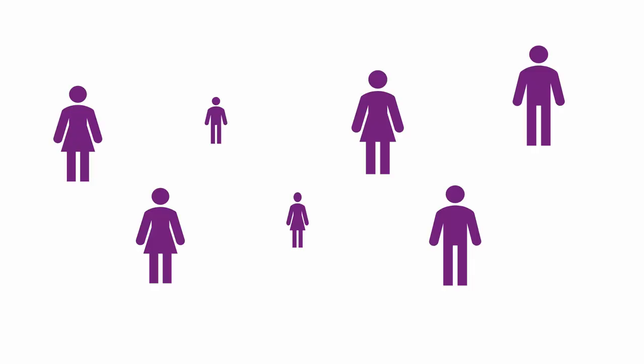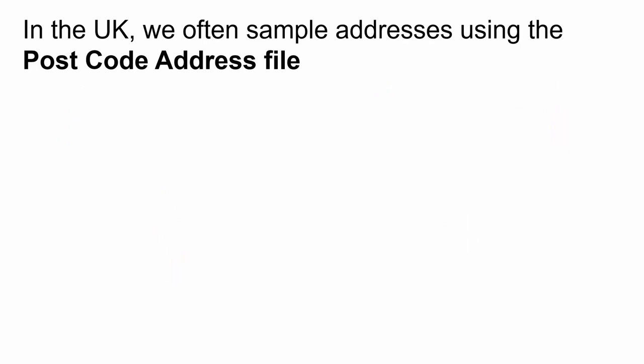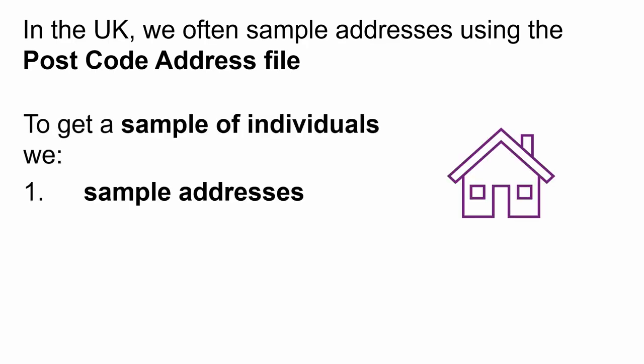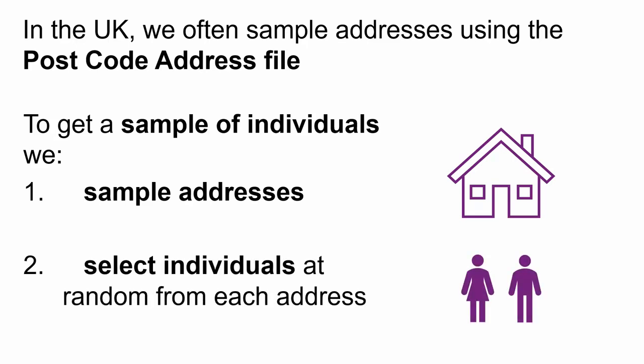Let's explore some different kinds of weights, starting with design weights. One reason for weighting data is that common sampling methods mean members of a population can have different chances of being selected to take part. For example, surveys in the UK often draw a sample from a list of addresses called the postcode address file. To get a sample of individuals, we first sample addresses, and then select individuals at random from each address.